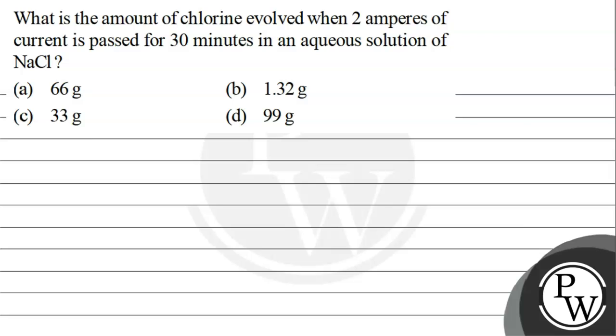Hello Bacho, let's read this question. The question says: What is the amount of chlorine evolved when 2 amperes of current is passed for 30 minutes in an aqueous solution of NaCl? Option A: 66 gram, option B: 1.32 gram, option C: 33 gram, or option D: 99 gram.